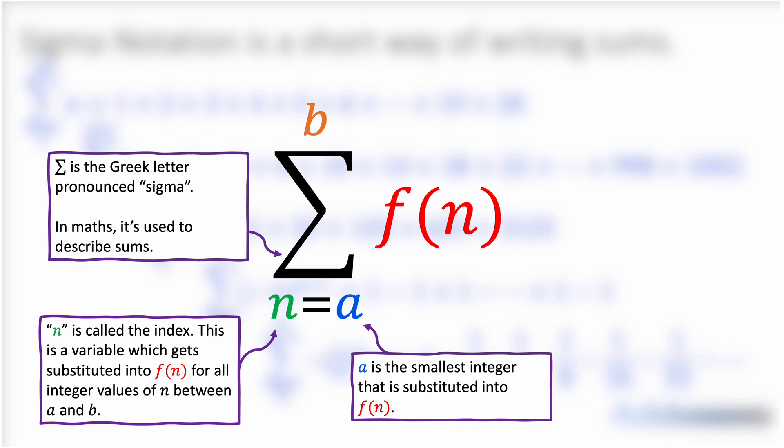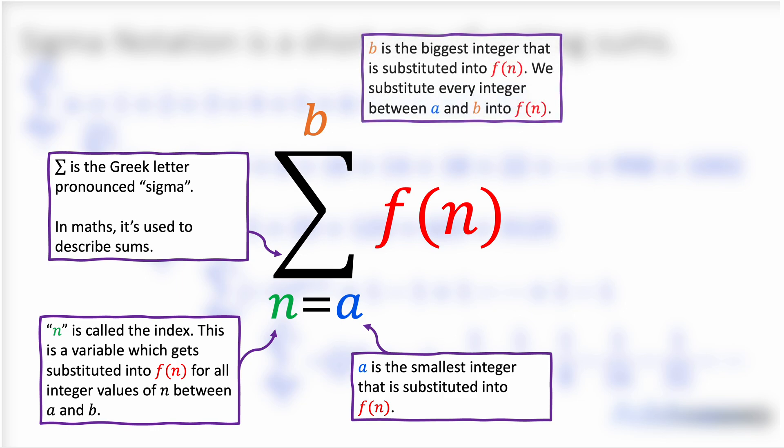A is the smallest integer that goes into f of n and b is the biggest integer that goes into f of n. We substitute every integer between a and b into f of n. Remember integer means whole number so we substitute every whole number into f of n between a and b.